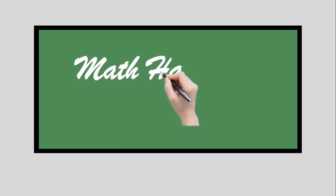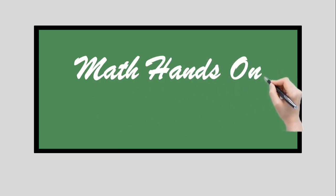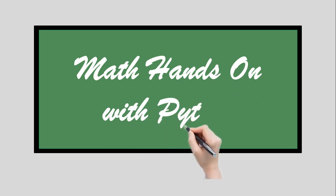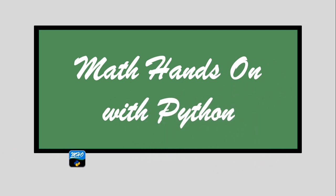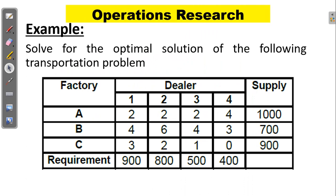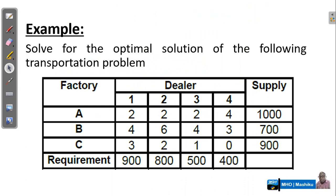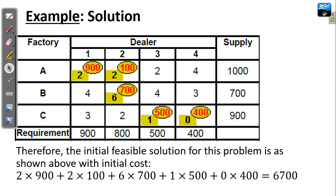Hello everyone, welcome back to Math Hands On with Python class. Today we are going to see how we can solve for the optimal solution of the transportation problem. We have this transportation problem here and we are going to assume that we have solved for the initial feasible solution using the northwest corner as we did in the previous lecture. This is the initial feasible solution with its associated total cost of 6,700.